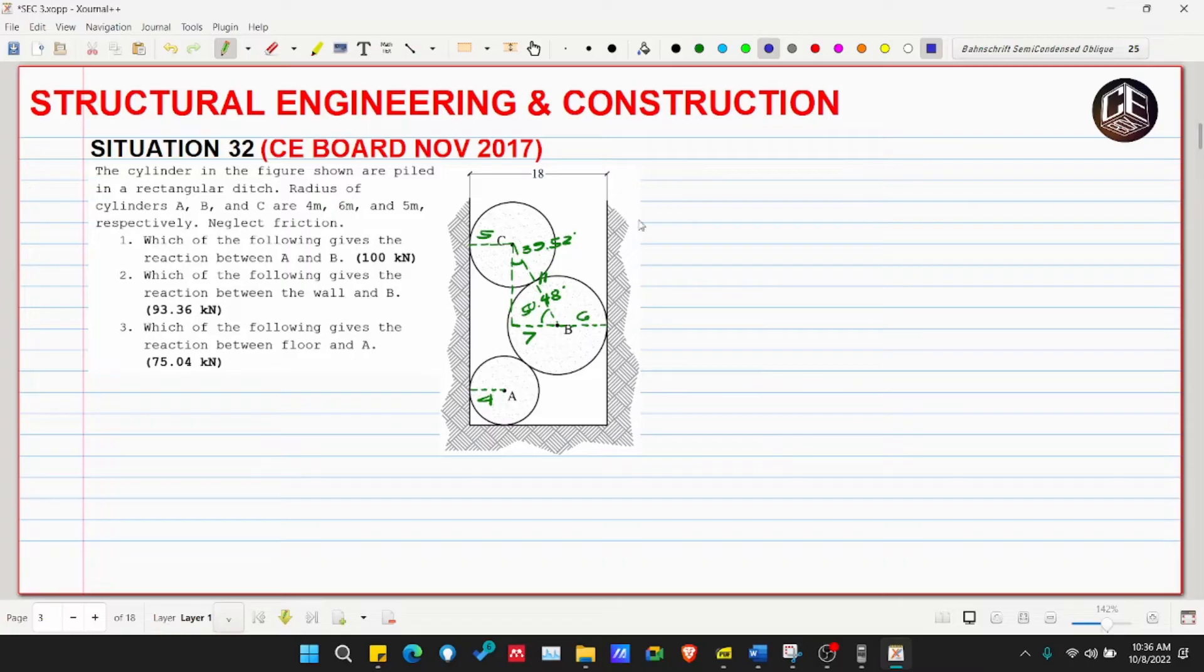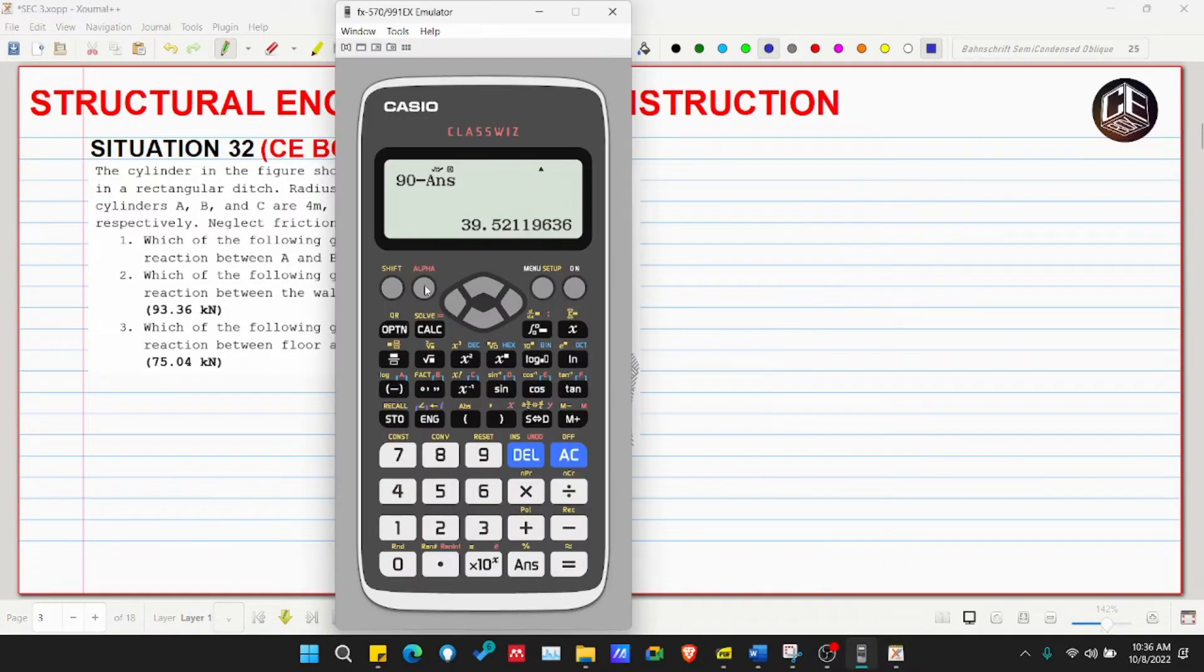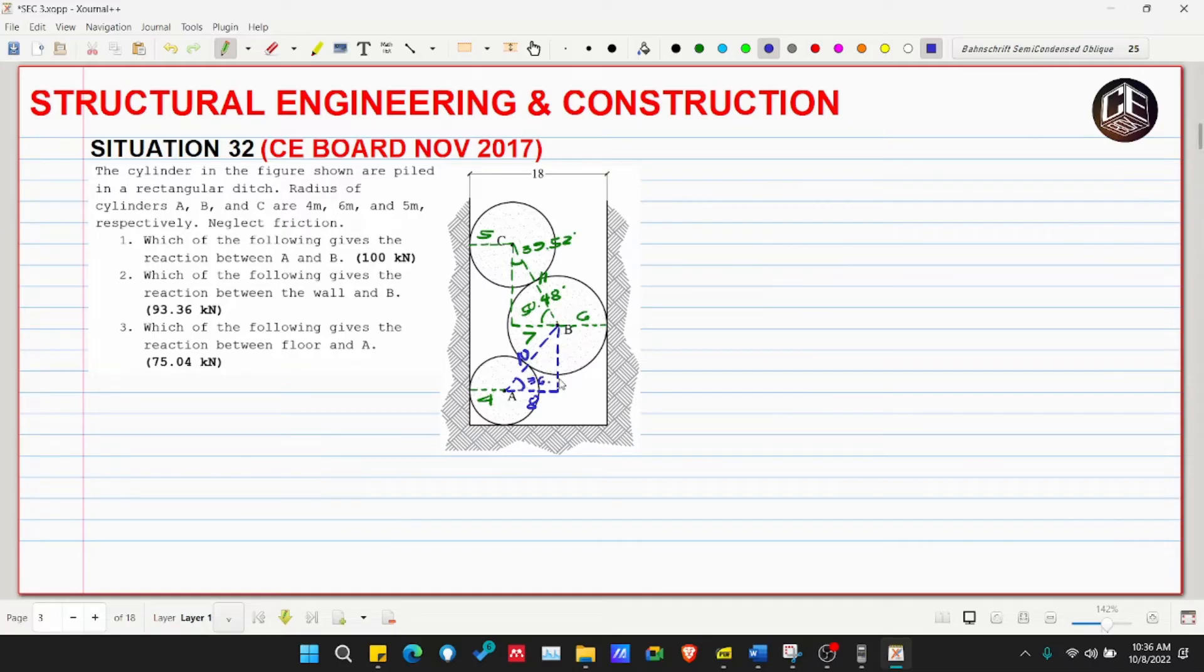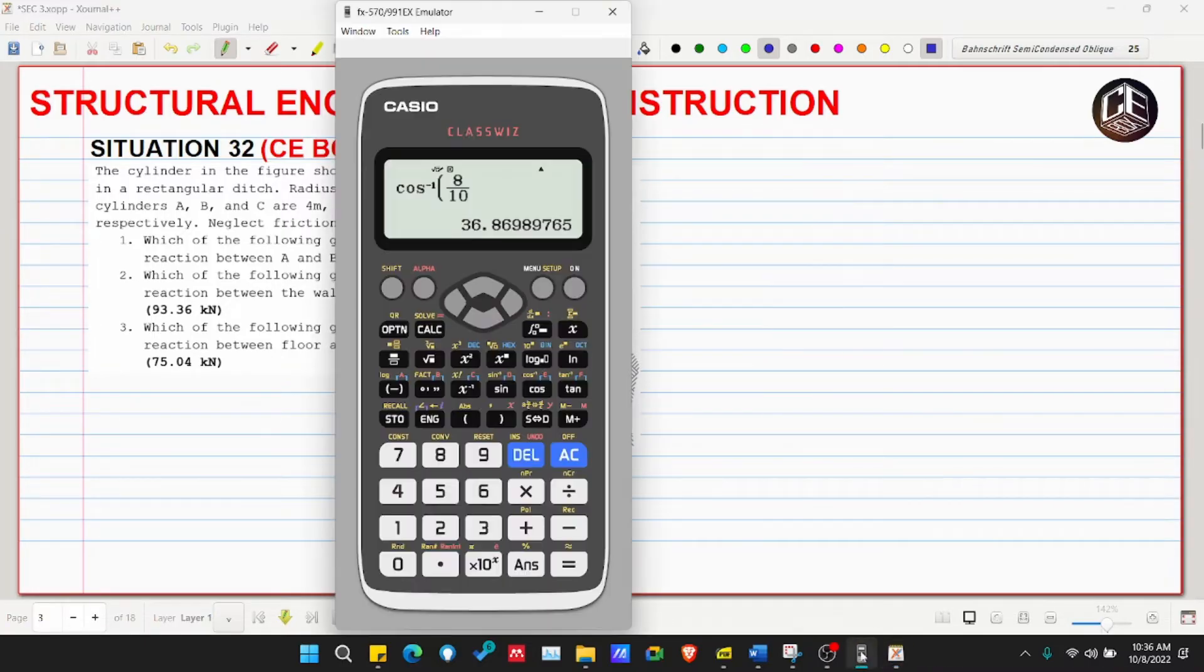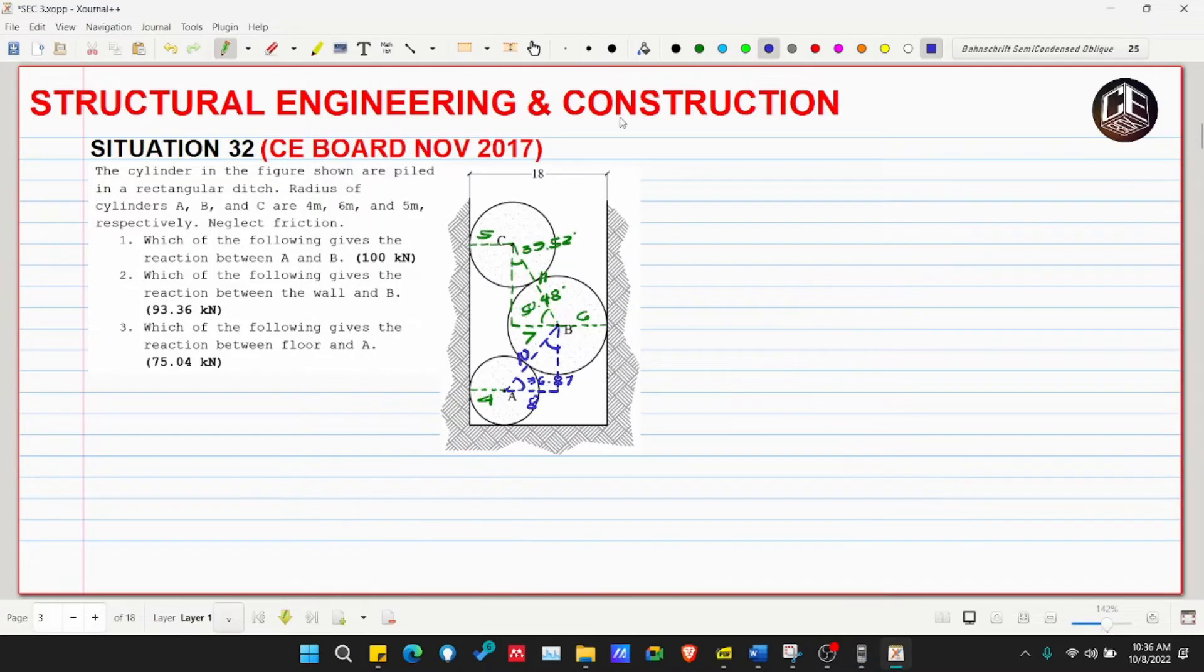We can also make a triangle between A and B, where the hypotenuse is the combined 4 and 6, so that is 10. And the base is 18 minus 6 and 4, so this is 18 minus 10, which is 8. So the angle is arc cosine of 8 over 10, which is 36.87 degrees. And this is 90 minus the answer, 53.13 degrees.